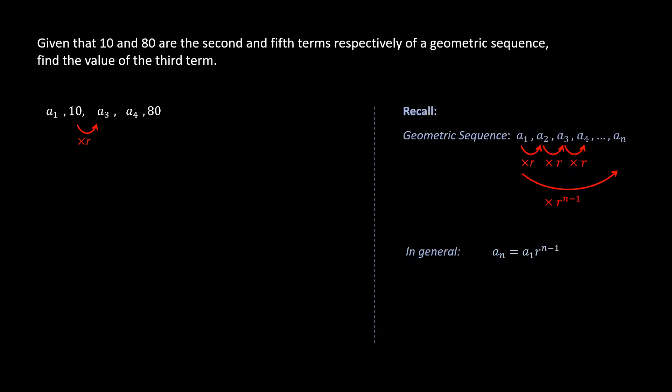But the common ratio is unknown, so we need to find a way to relate the second term to the fifth term. So if we multiply r by 10, we get a3.